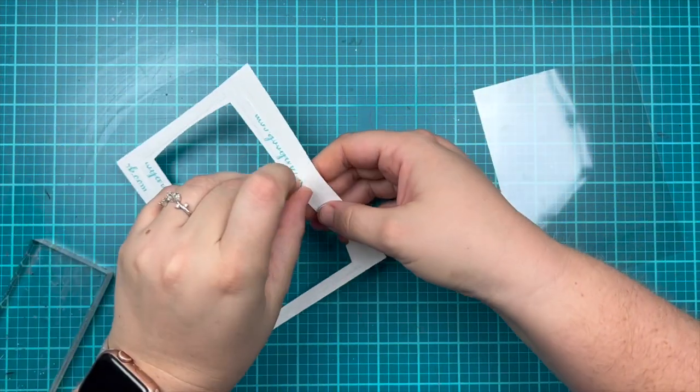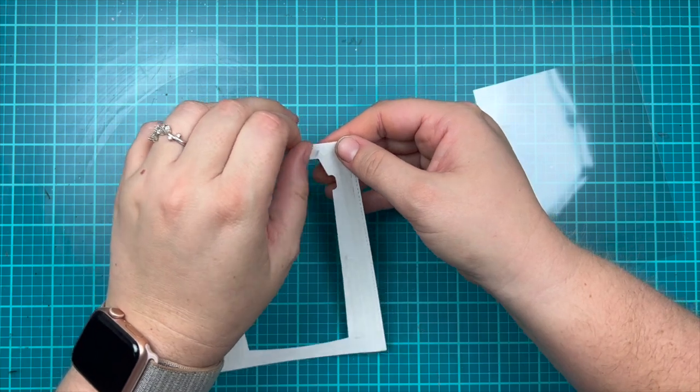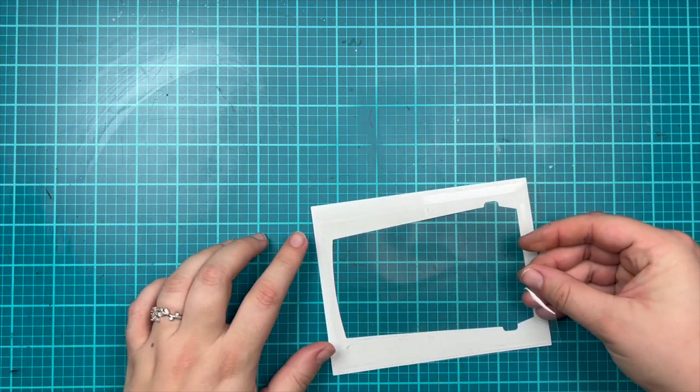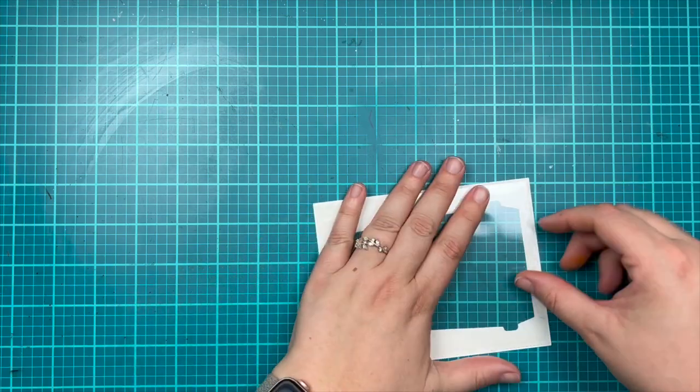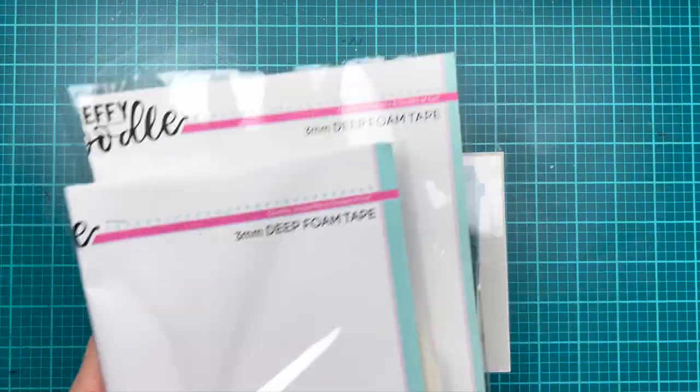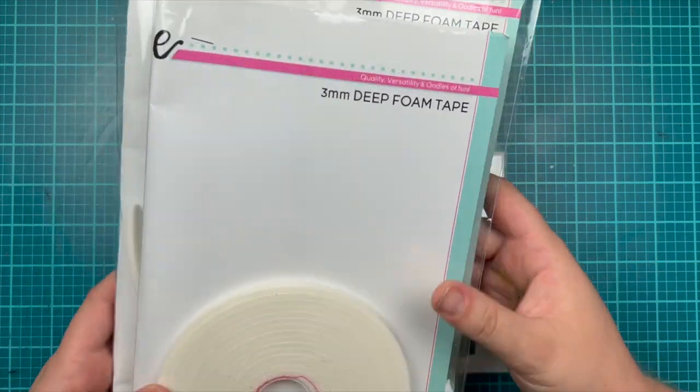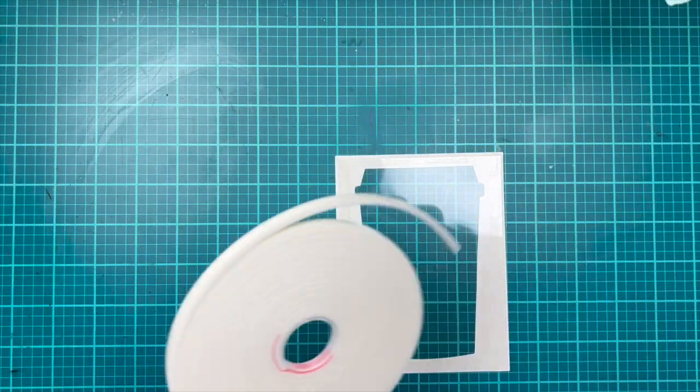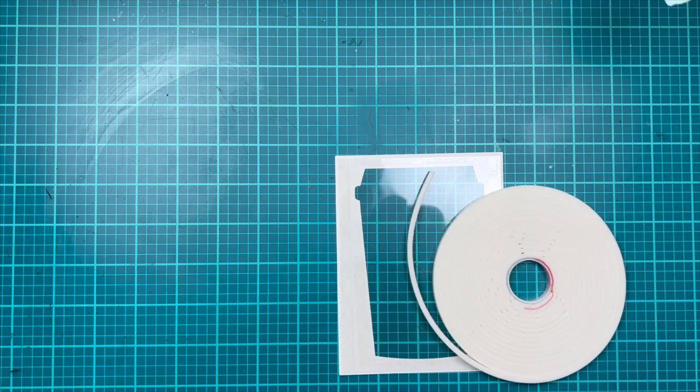I'm going to peel off all of the release paper from this adhesive, then lay my A2 size piece of acetate right onto the background. I actually cut it a tiny bit smaller than A2 so I didn't have to worry about lining it up perfectly.